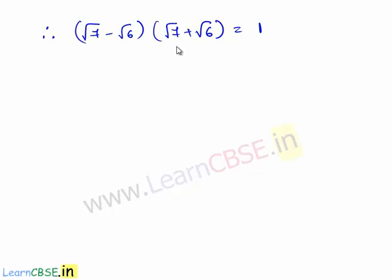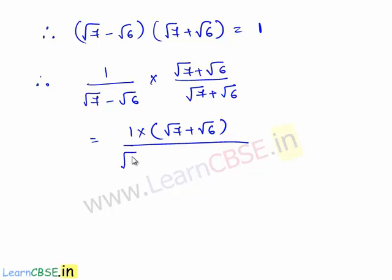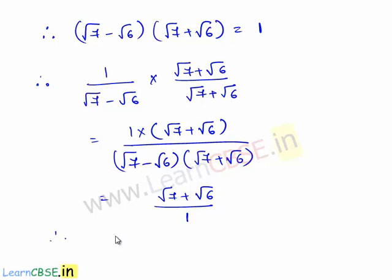Hence root 7 plus root 6 is called the conjugate of root 7 minus root 6. We can rationalize the denominator by multiplying it with its conjugate. Therefore we rationalize 1 by (root 7 minus root 6) by multiplying with its conjugate, root 7 plus root 6, on both numerator and denominator. This gives 1 times (root 7 plus root 6) by (root 7 minus root 6) times (root 7 plus root 6), which equals root 7 plus root 6 by 1. Therefore the rationalized expression for 1 by (root 7 minus root 6) is root 7 plus root 6.